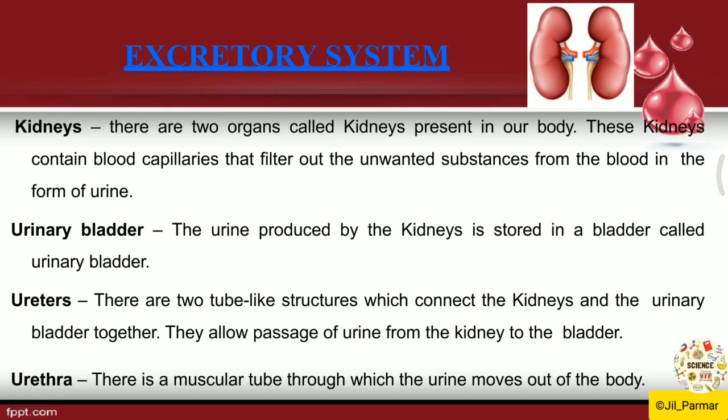In detail, the excretion system has 4 things: kidney, urinary bladder, ureter, and urethra. There are 2 organs called kidneys present in our body. The kidney contains blood capillaries that filter out unwanted substances from the body in the form of urine.